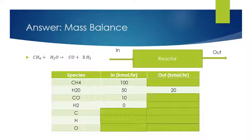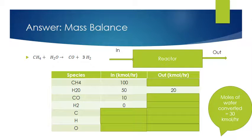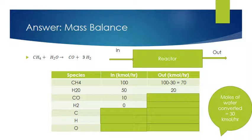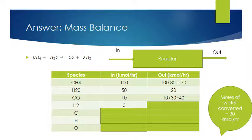We have 50 kilomoles per hour of water flowing in and 20 kilomoles per hour flowing out, meaning 30 kilomoles per hour of water is being converted. For every mole of water consumed, one mole of methane is consumed, so 30 kilomoles per hour of methane was converted. We had 100 in and used 30, leaving 70 kilomoles per hour of methane flowing out. We made 30 kilomoles per hour of CO in the reactor, and had 10 flowing in, so 40 kilomoles per hour of CO flows out.